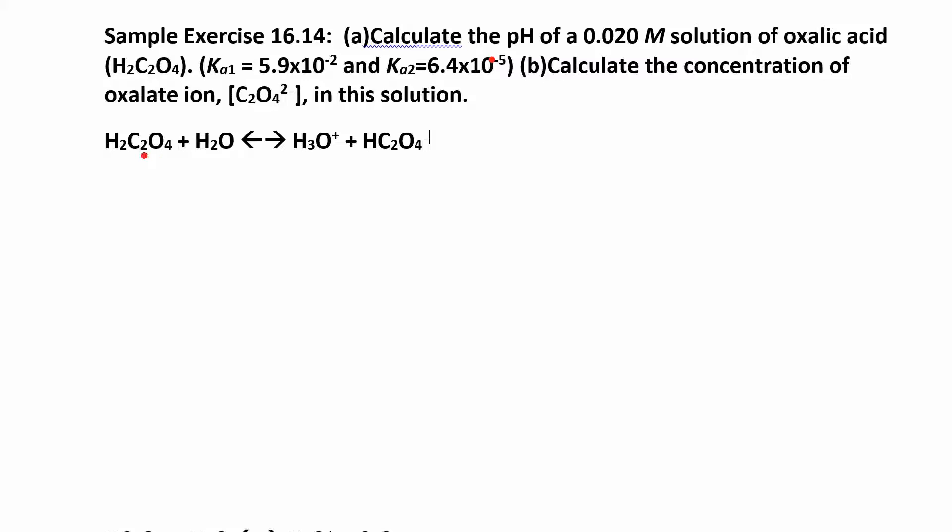Just like we usually do, take one of these hydrogens off, make hydronium, and then you can set up your Ka expression. Ka1 is going to be hydronium times HC2O4 minus over H2C2O4.